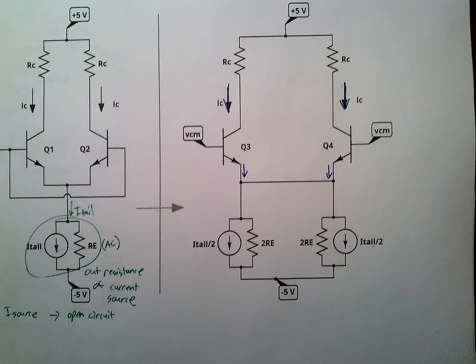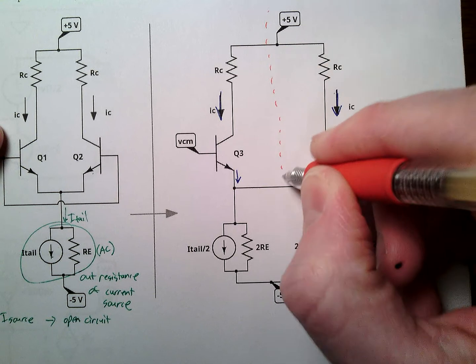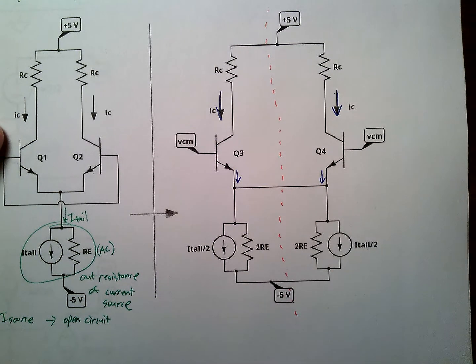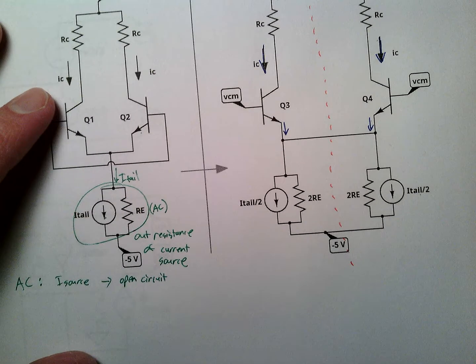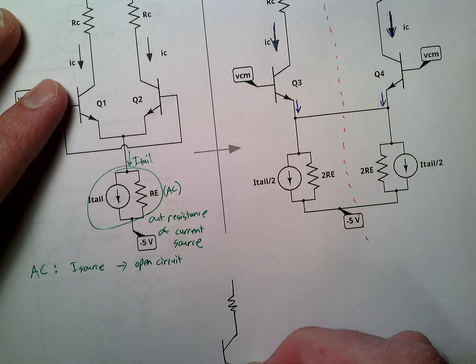Now, once we have this common mode half circuit, we can just draw a dotted line. This is the half circuit part. You just cut it in half, and then we just end up with a circuit that is familiar to us all.